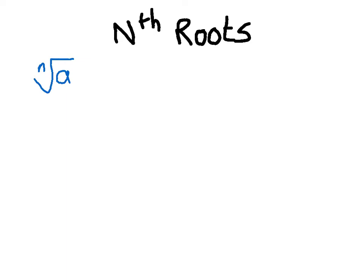The first thing we want to discuss in this chapter is nth roots. We're going to be dealing with radical expressions. This right here is called a radical expression. It has a radical bar, an index n, and on the inside it has what's called a radicand. So: this is a radical expression, n is the index, and a is the radicand.